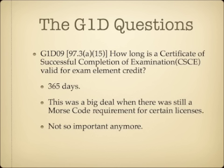How long is the Certificate of Successful Completion of Examination, or CSCE, valid for exam element credit? The answer is 365 days. This was a big deal back when the Morse code requirement was still there for certain licenses, because you took the Morse code element separate from the actual exam element. If you didn't have that CSCE when you passed the other element, you were in trouble. It's not so important anymore, but it's still a question on the exam.